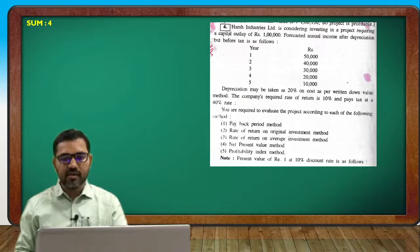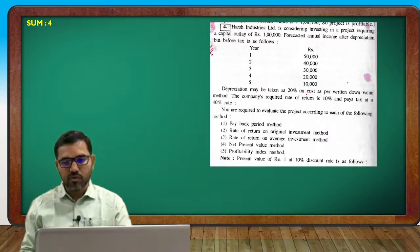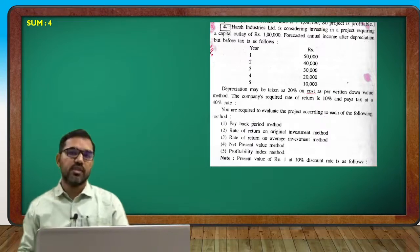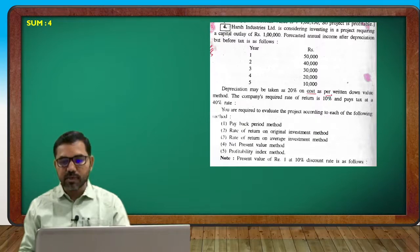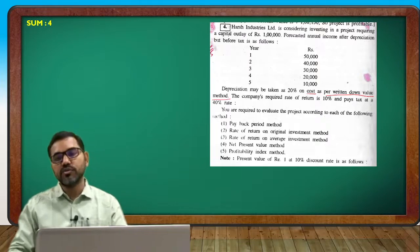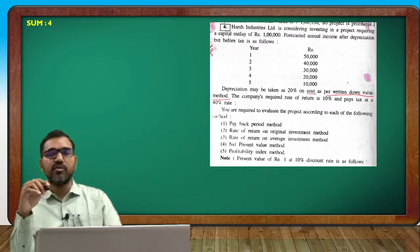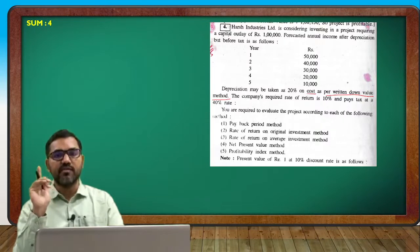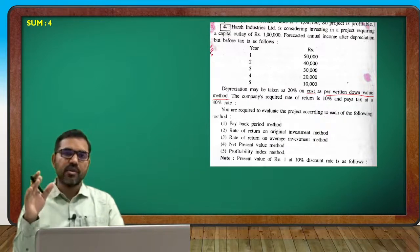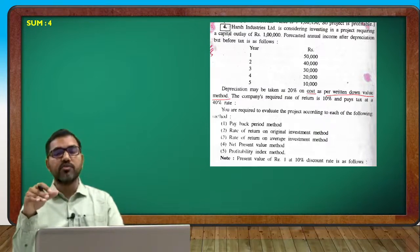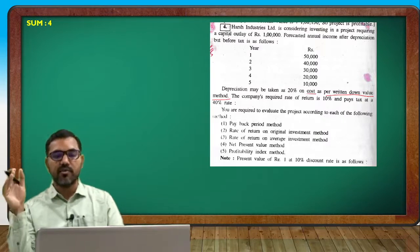Depreciation may be taken at 20% on cost. The original cost is as per the Written Down Value method. In the last question, depreciation was on original cost using the Straight Line Method. Here depreciation is on cost as per the Written Down Value method.